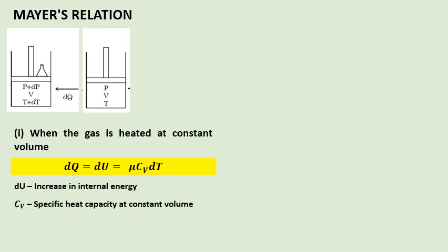Here, Cv is the specific heat capacity at constant volume of the gas, mu is the number of moles of gas, and dT is the increase in temperature.